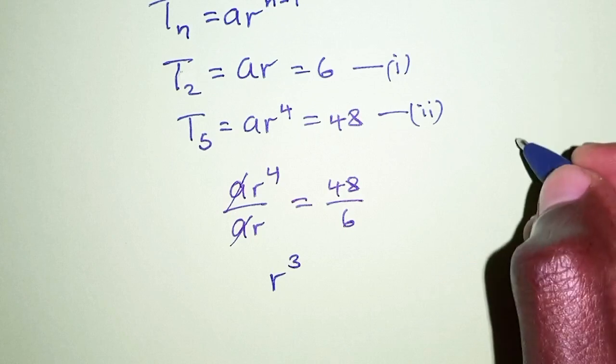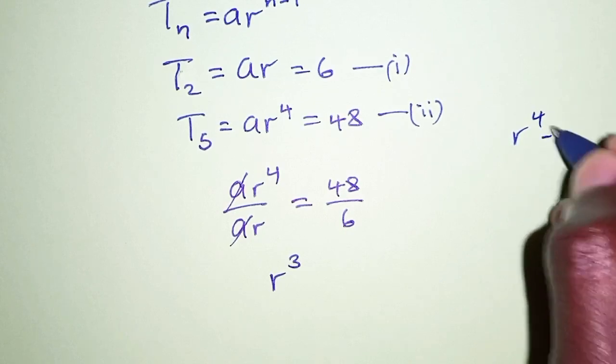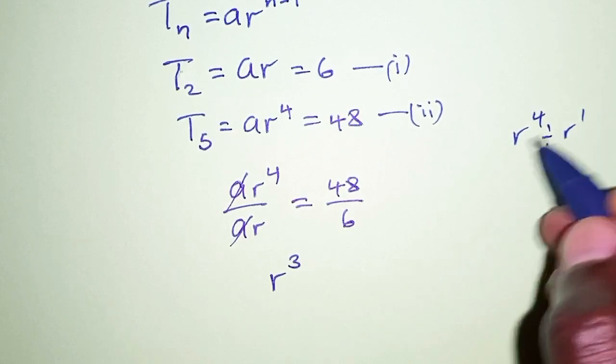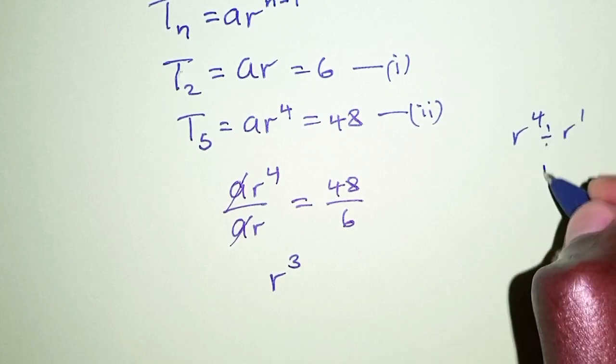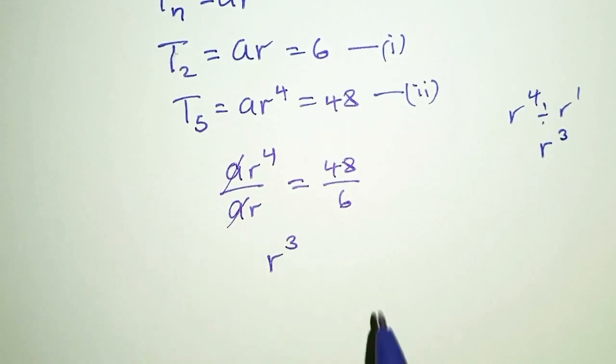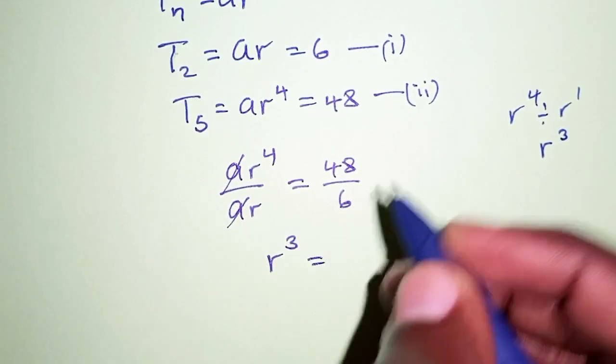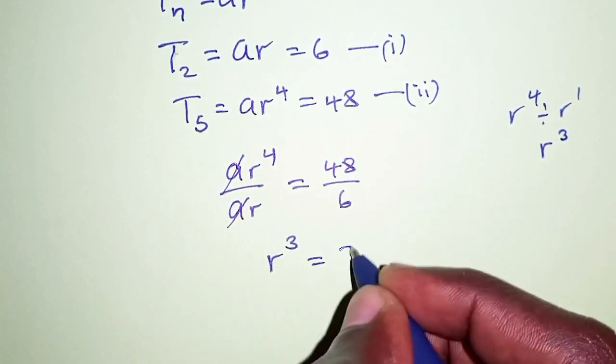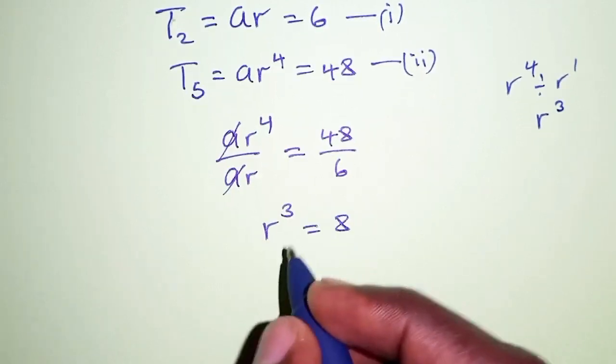Remember we have r to the power 4 divided by r to the power 1. Applying laws of indices here, we are going to subtract so that we have r to the power 3. 4 minus 1 is 3, so that is for the left hand side.